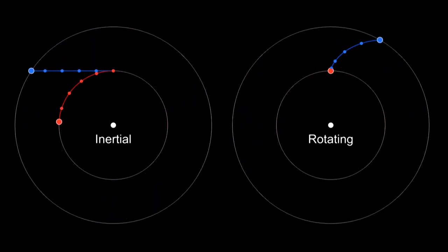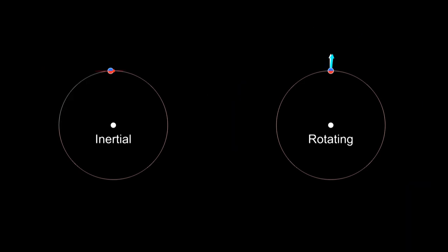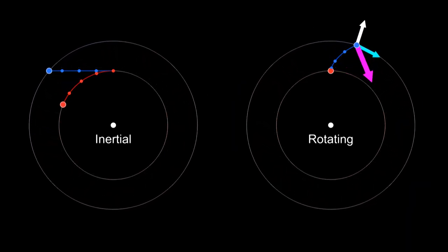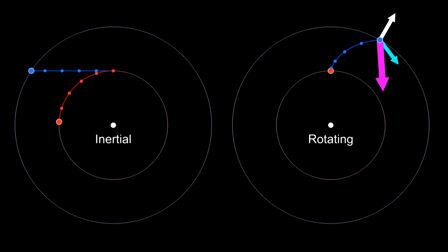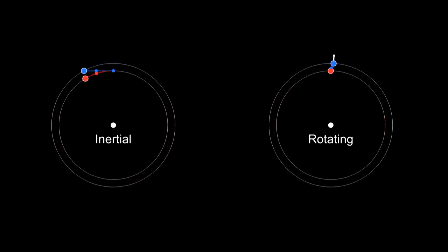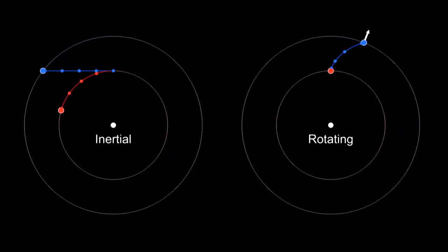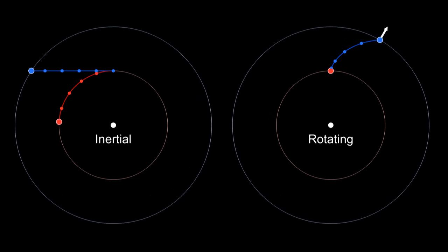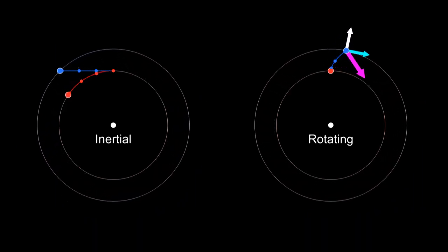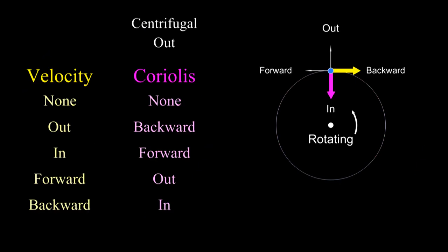To summarize: we've been going back and forth between a rotating frame and an inertial frame. If you use the normal laws of motion in the inertial frame, these fictitious forces just pop up in the rotating frame. In the rotating frame there's a centrifugal force pushing out, plus the Coriolis force whenever the objects are moving. Now we know how the Coriolis force works within the rotating reference frame.